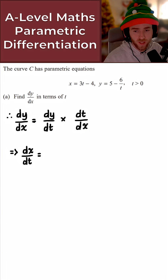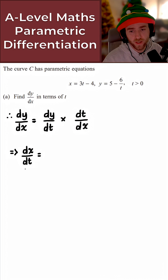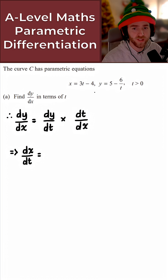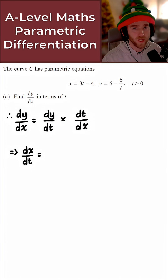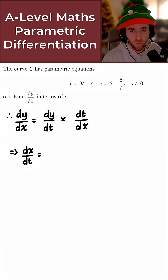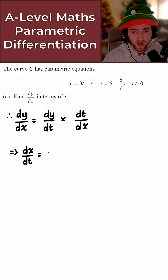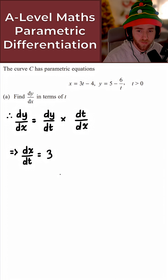Let's start by finding dx/dt — that's simply the derivative of x with respect to T. And if I'm being honest, this should not cause anybody a single issue. If it does, I am slightly worried, because in this case it's just simply 3. So for dx/dt, we just simply get 3.